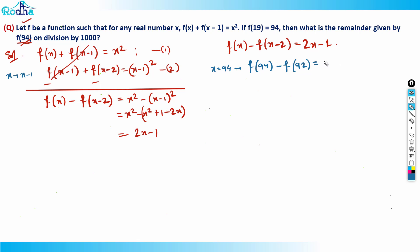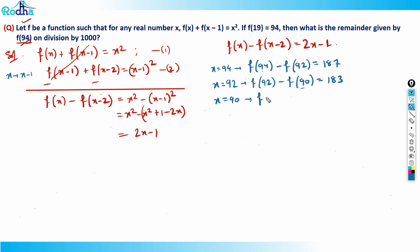Putting x = 92: f(92) - f(90) = 2(92) - 1 = 183. Putting x = 90: f(90) - f(88) = 179. I keep going down similarly until x = 20, which gives f(20) - f(18) = 2(20) - 1 = 39.